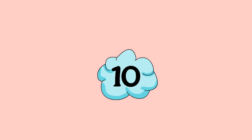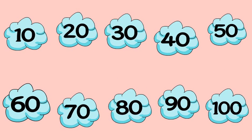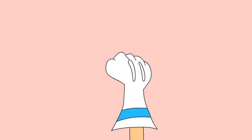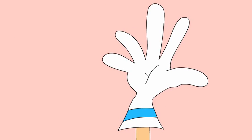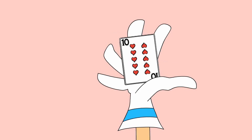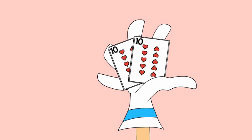If you can skip count by 10, then the x10 facts will be easy to remember. One group of 10 is 10, so 1 x 10 is 10. Two groups of 10 is 20, so 2 x 10 is 20.